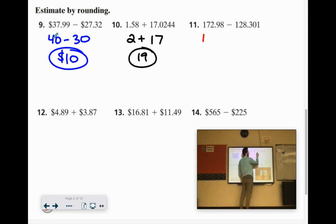172.98. Let's call it 170. 128. Let's call it 130. The hundreds will cancel. 100 minus 100. So we're just left with 70 minus 30, which is 40.